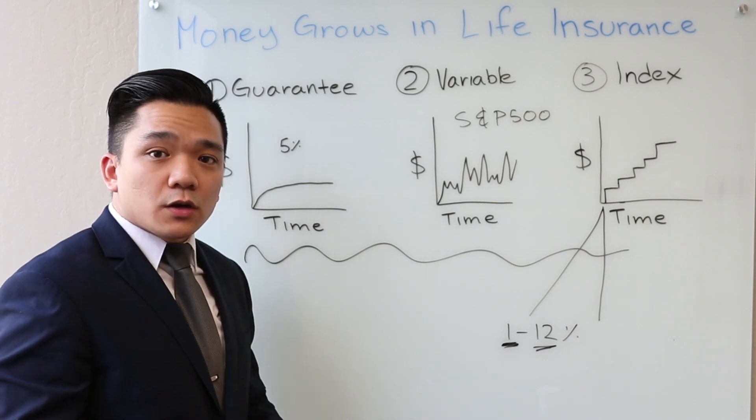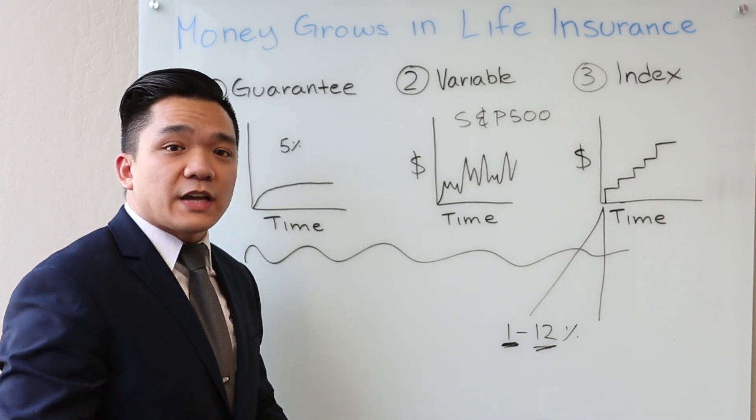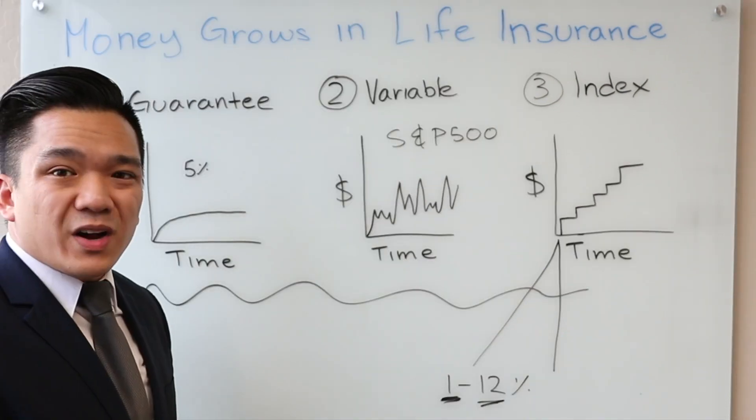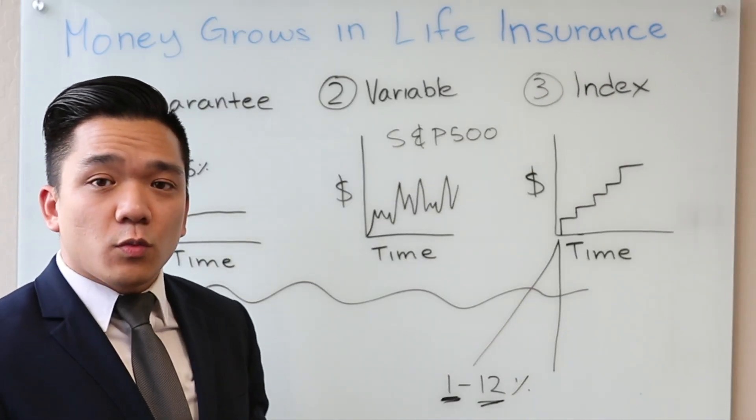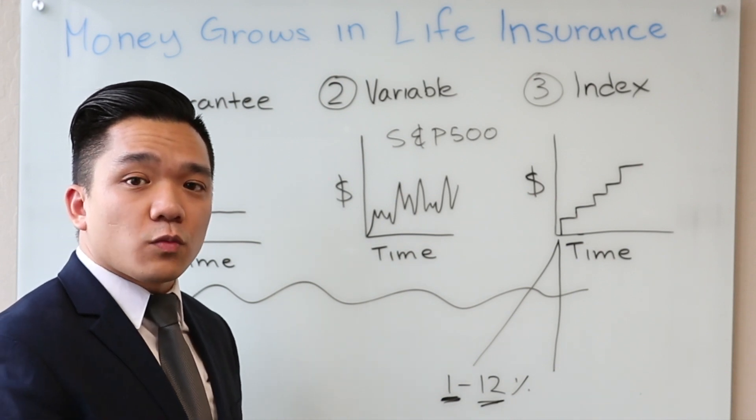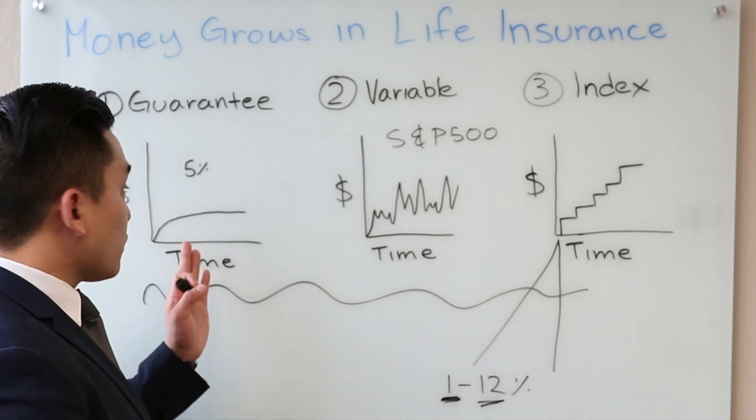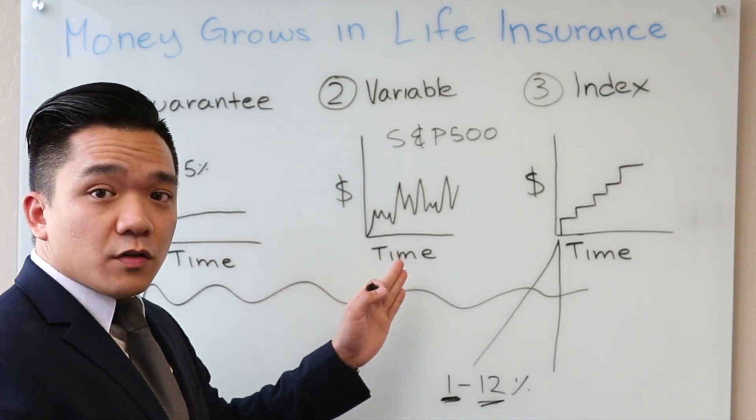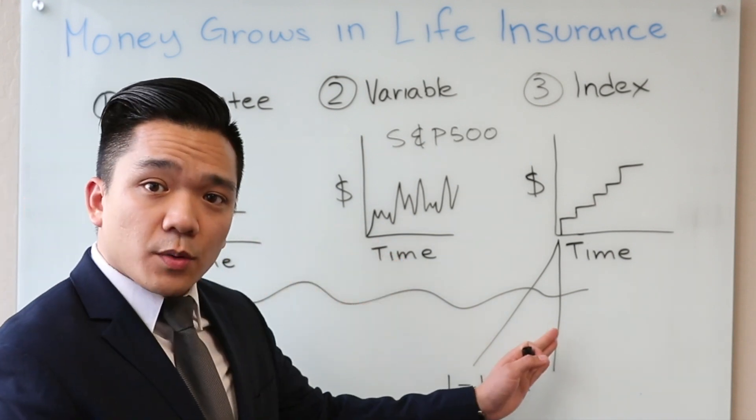If you're feeling a little bit more risky, you're young, you want to take the risk, you want to have growth that you see in the market, you're going to probably pick variable. But if you want something like a blend of both, where you want something very conservative, but also gives you the upside of growth as well, because maybe you're not so happy with the 5%, but also you don't want to take the pitfalls of a market crashing, then the index will probably be more suitable for you.